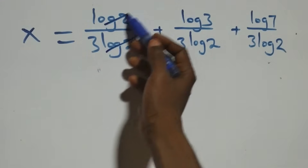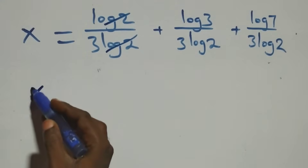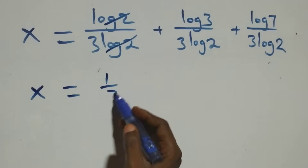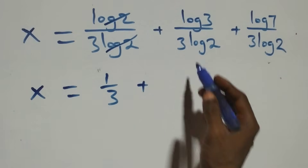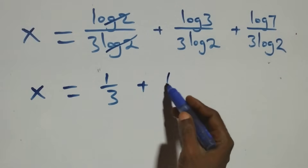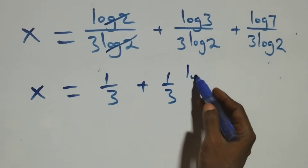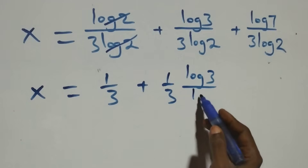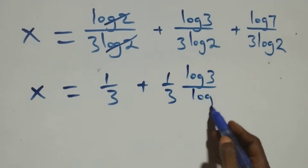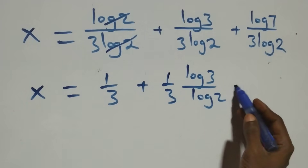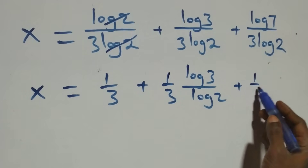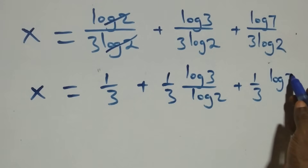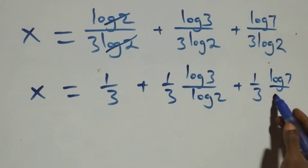The log 2 terms cancel in the first fraction giving 1 over 3. We factor out 1 over 3, so x equals 1 over 3, plus 1 over 3 multiplied by log 3 over log 2, plus 1 over 3 multiplied by log 7 over log 2.